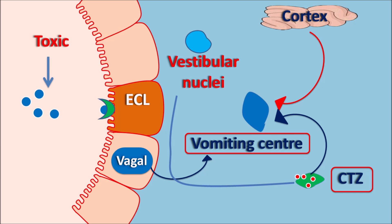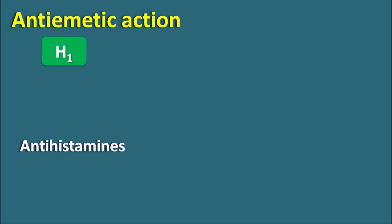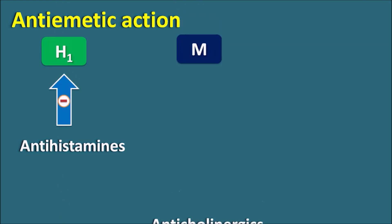The emetic response is mediated by both CTZ and the vomiting center. CTZ can be activated by toxic chemicals which release serotonin, or by the vestibular nuclei. The vomiting center can be directly activated by vagal efferent neurons. Now, to produce anti-emetic action we have four types of drug targets: H1 antagonists can block H1 receptors, and muscarinic receptors can be blocked by anti-cholinergics.